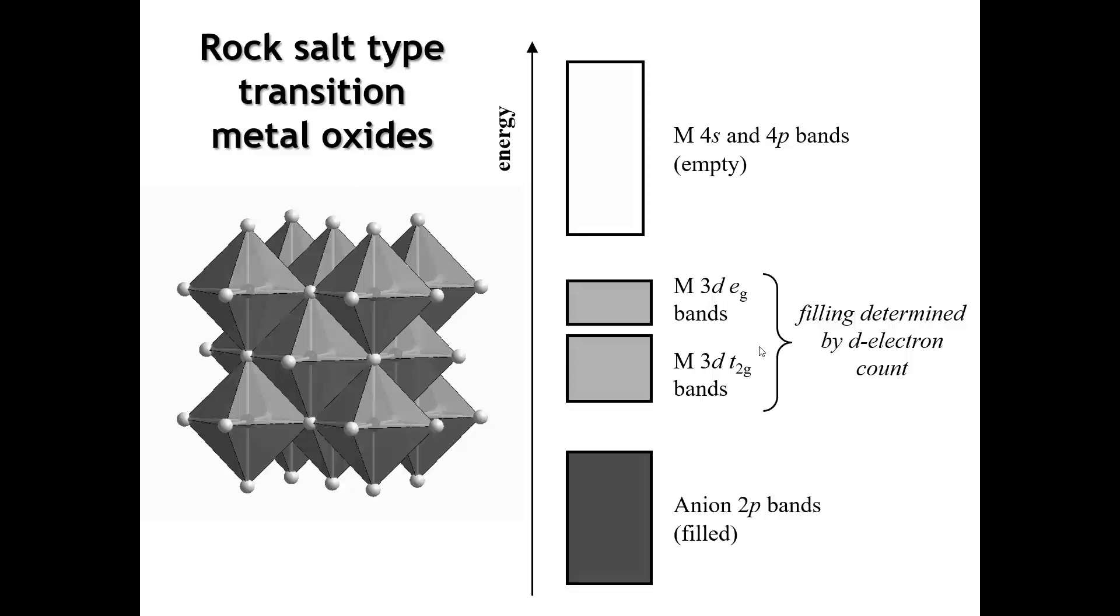Now let's look at the behavior of real compounds. We can look at metal oxides that have the rock salt structure. In the rock salt structure, each octahedron shares all of its edges with neighboring octahedra. We have the oxide bands down here and the metal D bands where all the interesting stuff happens. The T2G bands are wider than the EG bands because there's overlap across the shared edges. The T2G orbitals, like the DXY, point toward the edges of the octahedron and overlap with each other. The filling depends on the electron count.